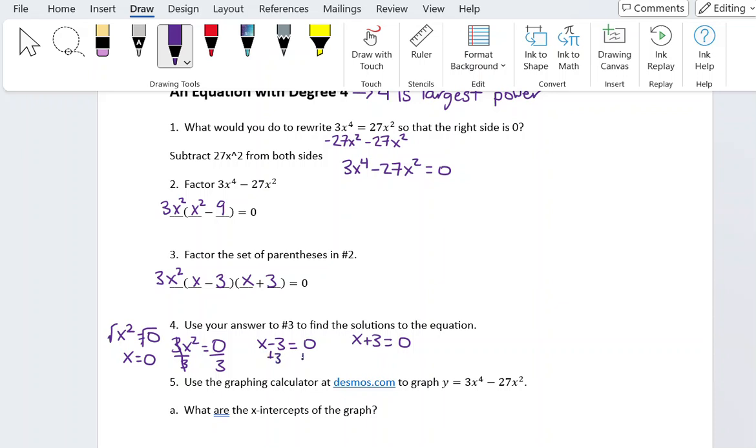From these other two equations, we get x equals 3 and x equals minus 3. So our three solutions are 0, 3, and negative 3.